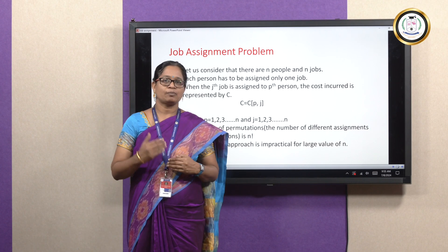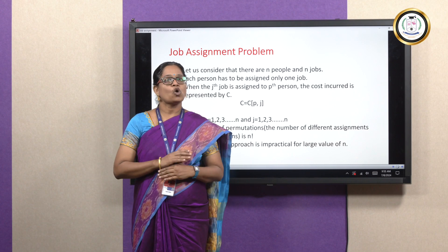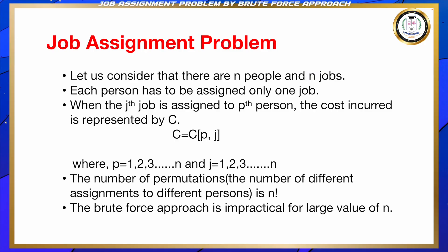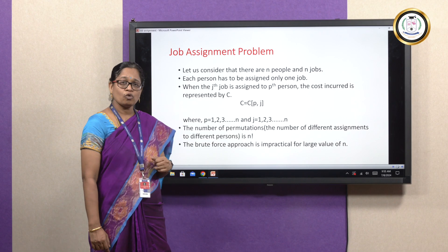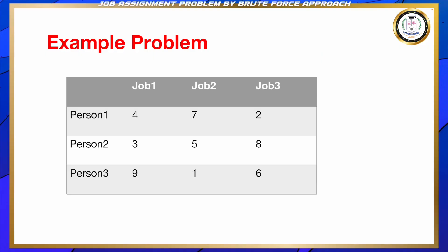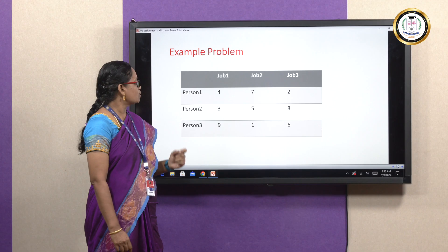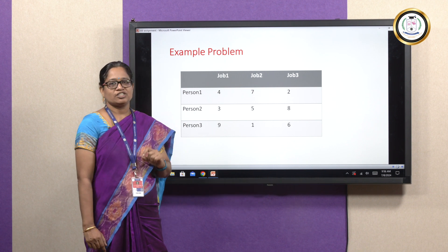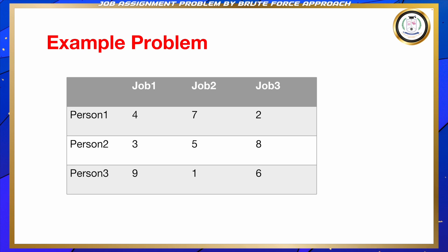The brute force approach lists all the possible solutions; it tries to iterate every possibility of the solution. This approach is impractical when we take large values of N, so we can go for the brute force approach for small values of N. This example is given for the job assignment problem. In this example, we have taken three persons and three jobs. Each person is assigned a job and the cost incurred is also given in the matrix cell.